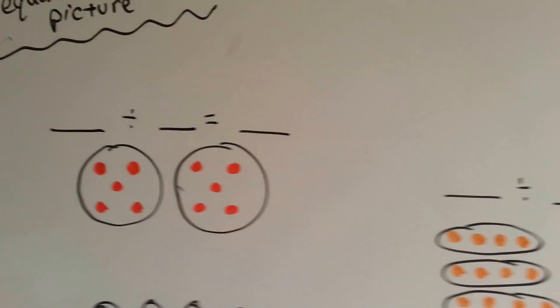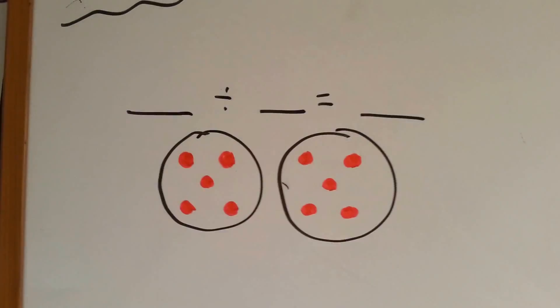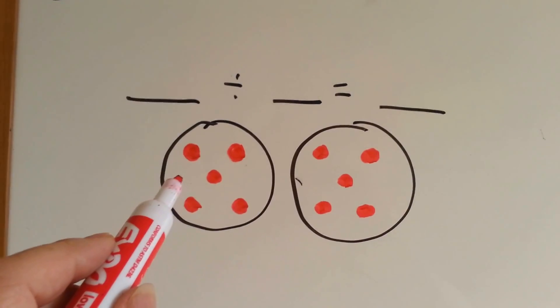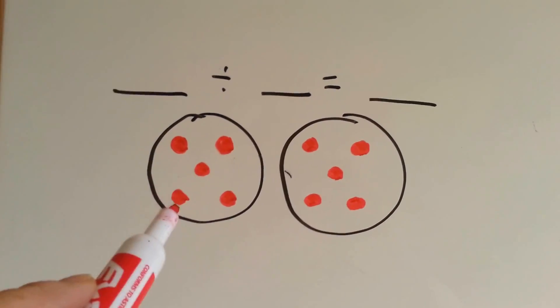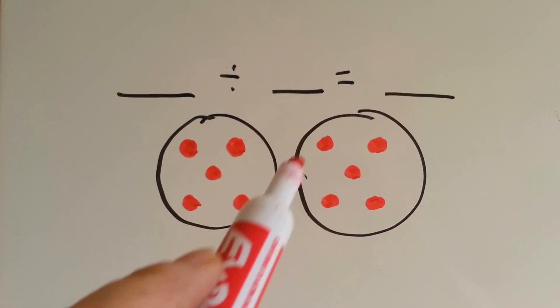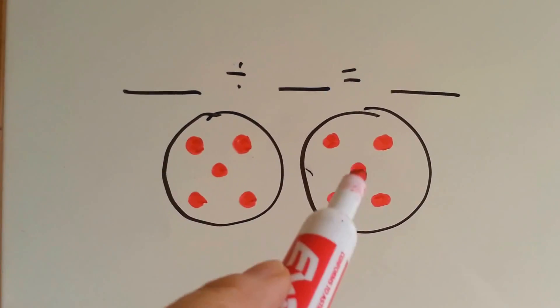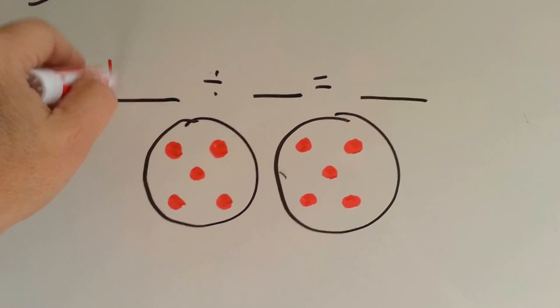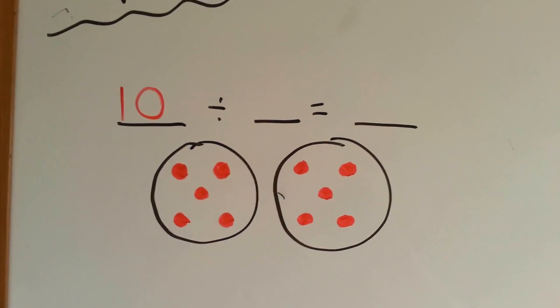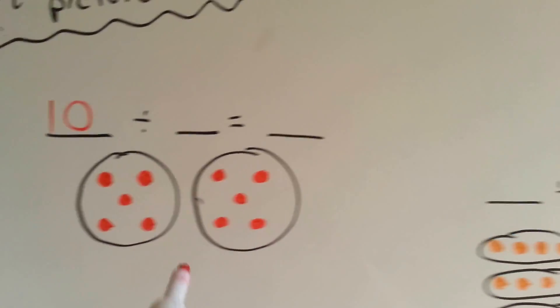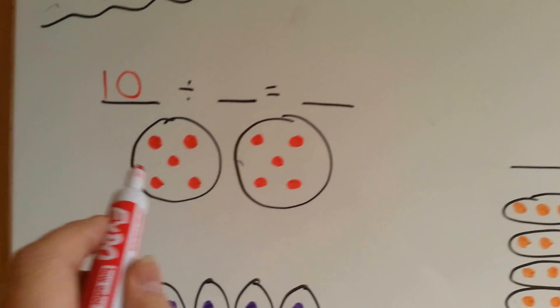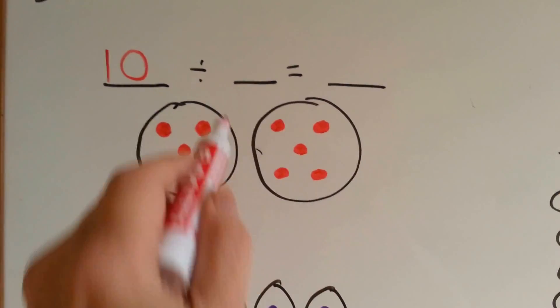Let's look at the first one. We're going to count the total number of dots: 1, 2, 3, 4, 5, 6, 7, 8, 9, 10. We have 10 dots. Now remember, on this one — how many groups do you see?